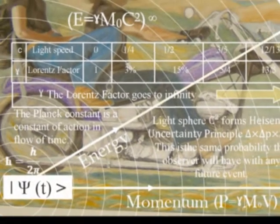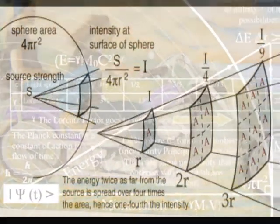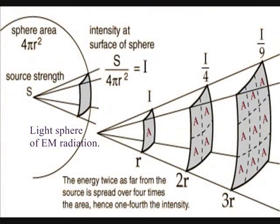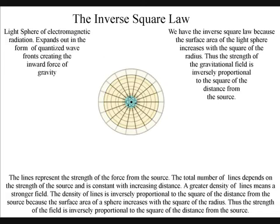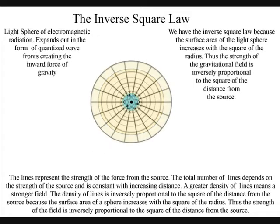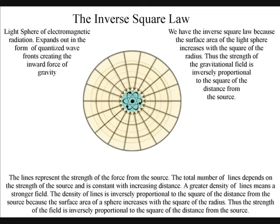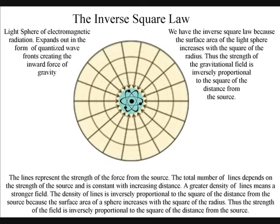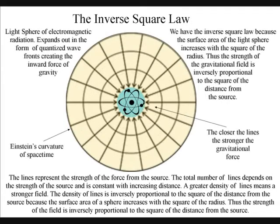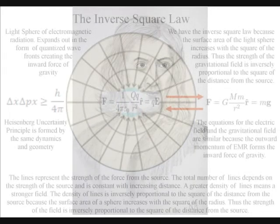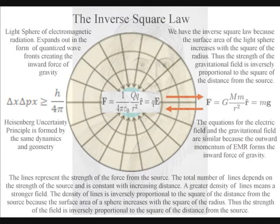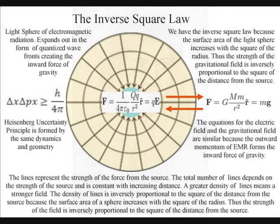We have the inverse square law because the surface area of the light sphere increases with the square of the radius, so the strength of the gravitational field is inversely proportional to the square of the distance from the source. There is no mysterious action at a distance — the gravitational field works at the speed of light because it is an integral part of one universal process with the electromagnetic force. We have one universal process that begins with the quantum wave-particle function expanding out as an inverse sphere and ends with the inverse square law of gravity and Newton's third law of motion: to every action there is an equal and opposite reaction. Gravity is the opposite reaction to the atoms radiating spherical wavefronts of electromagnetic radiation.